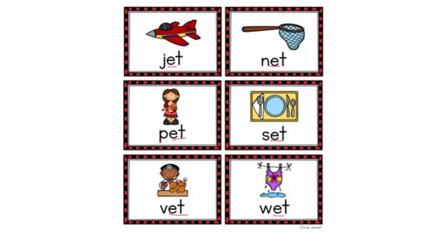Now let's read the words together: jet, net, pet, set, vet, wet. Did you hear the E sound in the middle? Do you know any other words that have E in the middle? Name them for me please. Well done everybody!